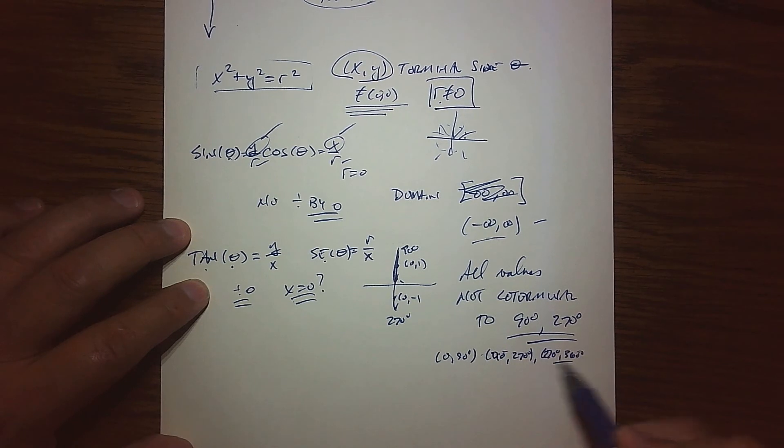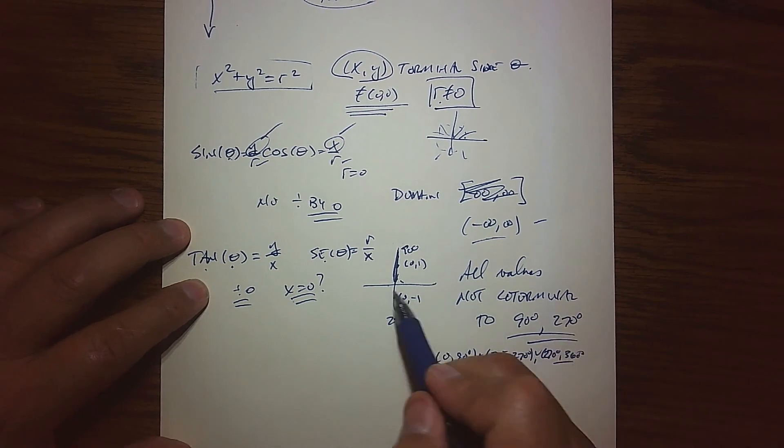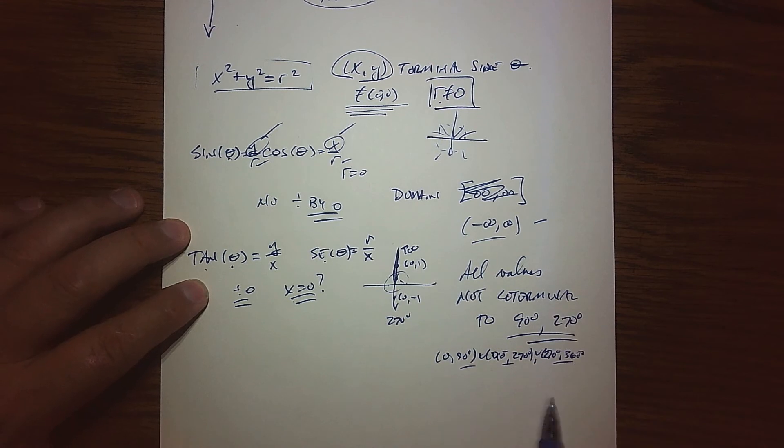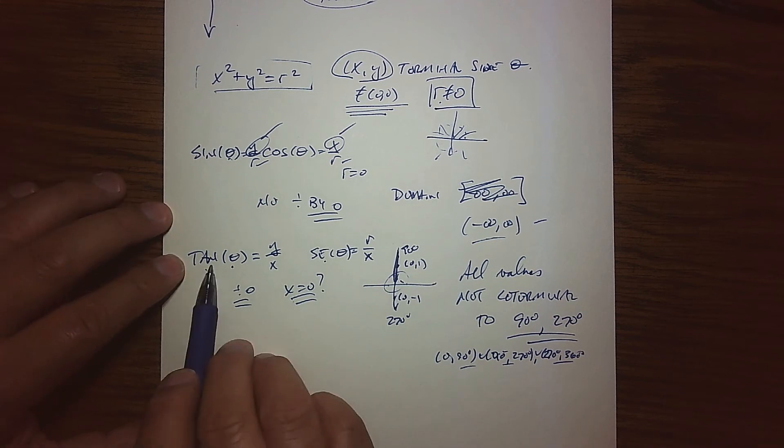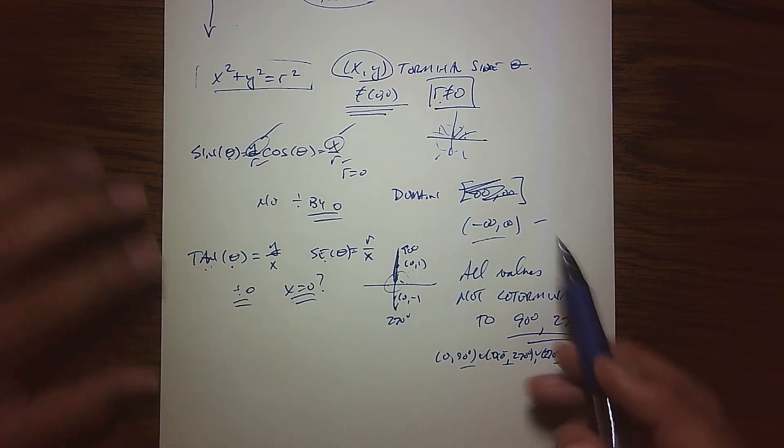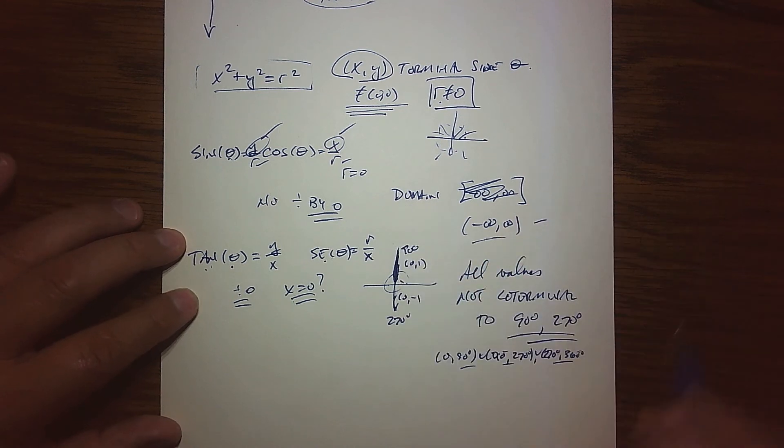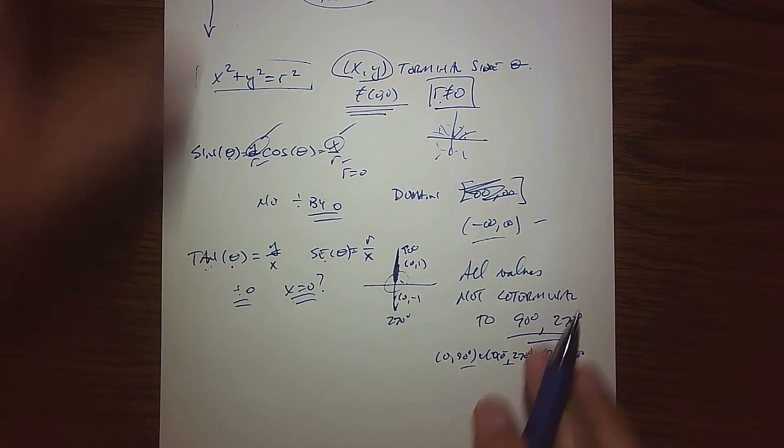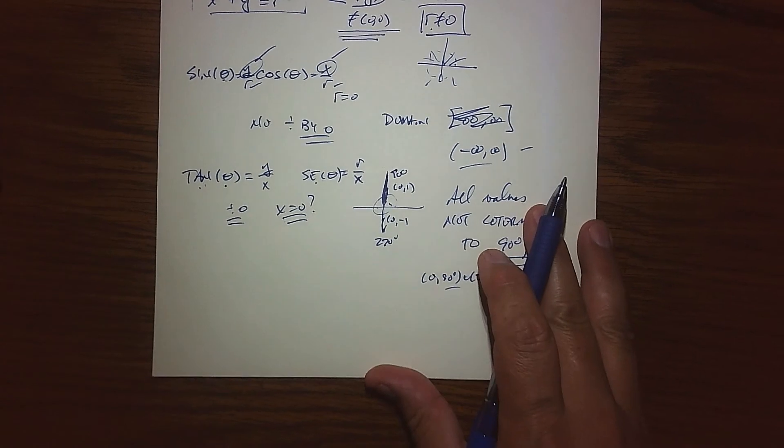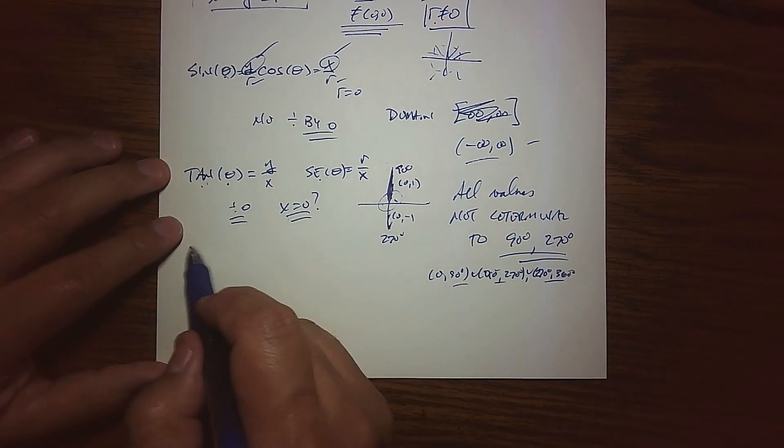That would be the domain in just the first rotation, and of course we have all the co-terminality angles. Kind of hard to write, but just the main idea - tangent and secant are fine as long as you're not one of these quadrantal angles, you're not co-terminal to 90 and you're not co-terminal to 270.